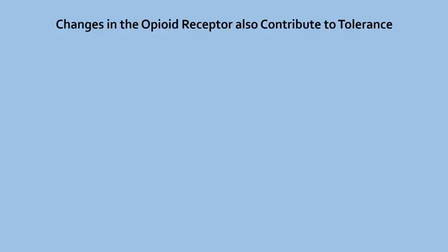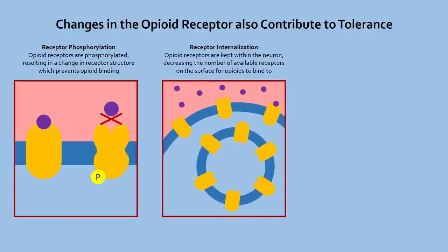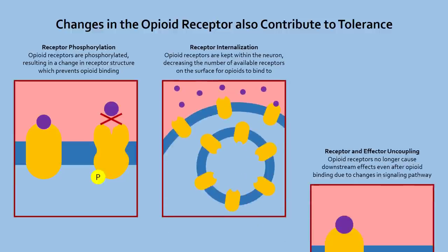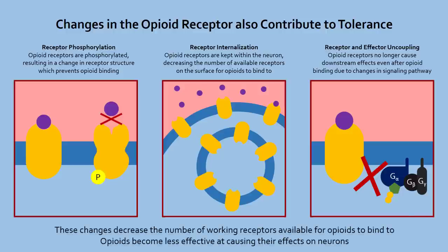At the same time, changes in gene expression from repeated opioid use can also cause receptor structural changes, internalization, and uncoupling, through pathways that may or may not involve cAMP. These changes effectively decrease the amount of functional receptors and make the neuron less sensitive to opioids, which further contributes to tolerance.